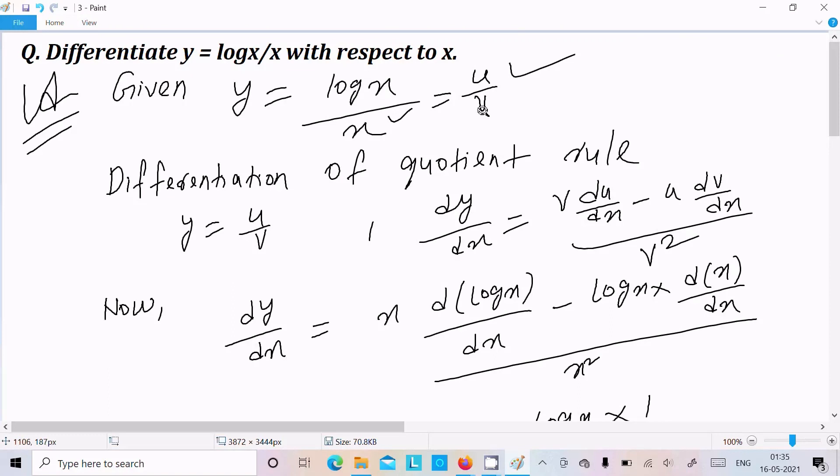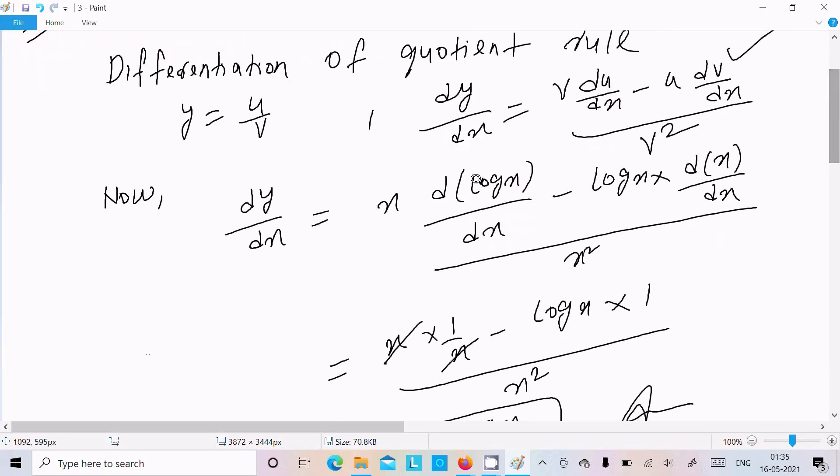If you get anything in the form like u divided by v, numerator over denominator form, you should use the quotient rule. This is the formula.